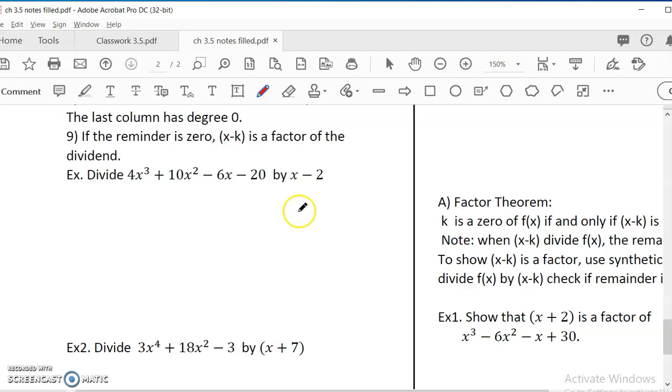I'm dividing 4x³ + 10x² - 6x - 20. Let me check all the x terms. So I have x to the power of 3, x to the power of 2, and then 1. I don't have any missing terms, so I don't have to insert anything. But I would pick all the coefficients: 4, 10, negative 6, and negative 20. And then outside, I do not pick 1 and 2. I pick only the k, which is 2. So not negative 2, but x minus k. So k is 2. You can think of it as x minus 2 equal to 0, so x is equal to 2.